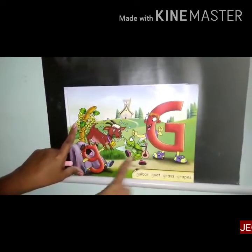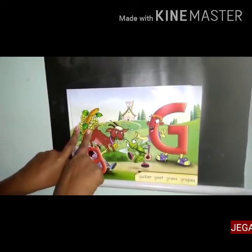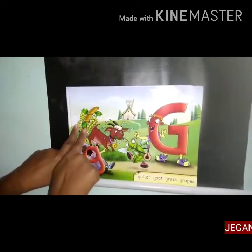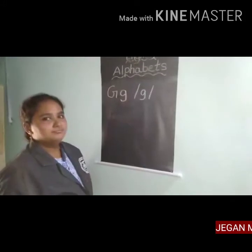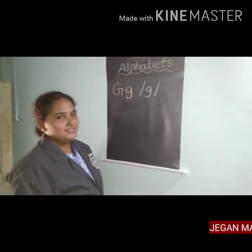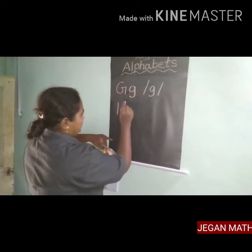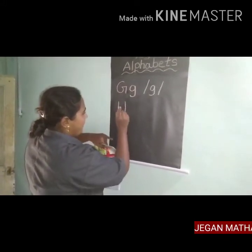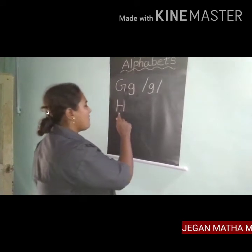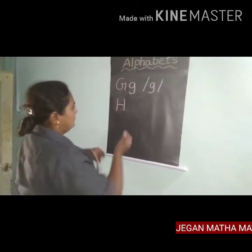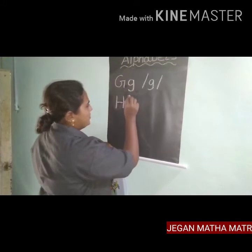Okay children, let's go to the next letter. What is the next letter, children? H. What is this? Capital H. What is the sound for H, children?